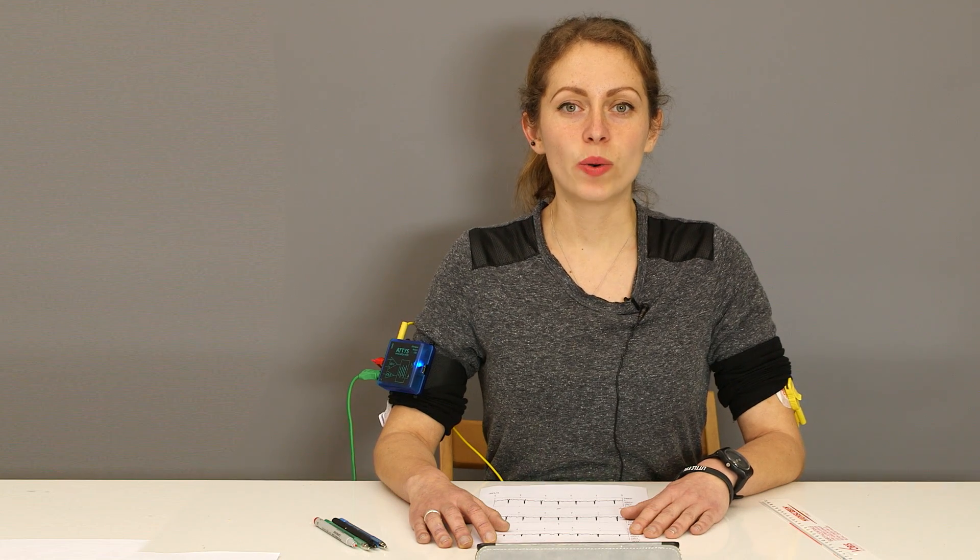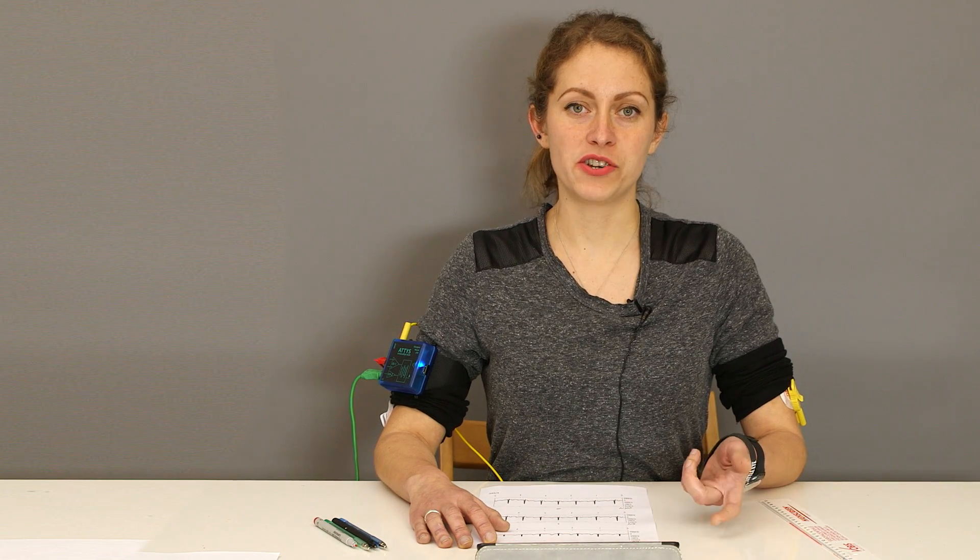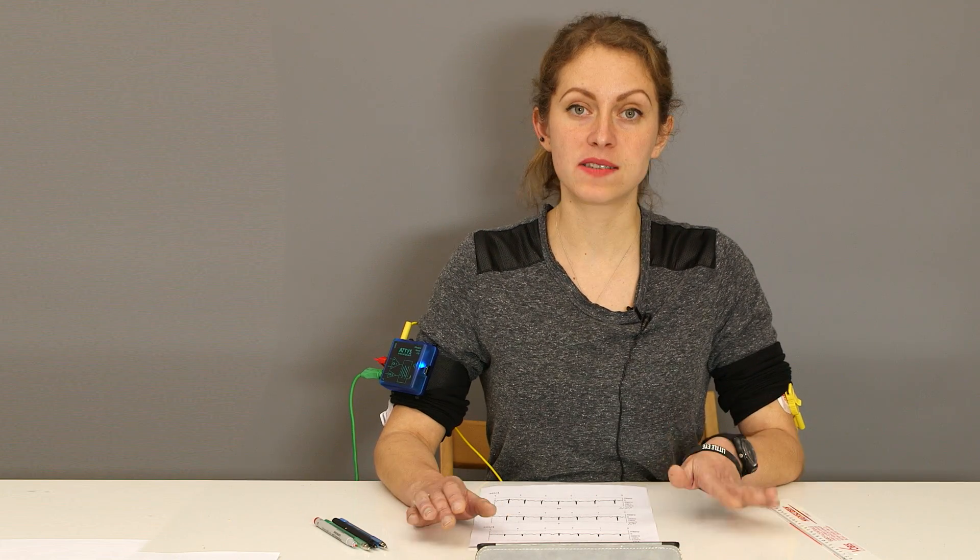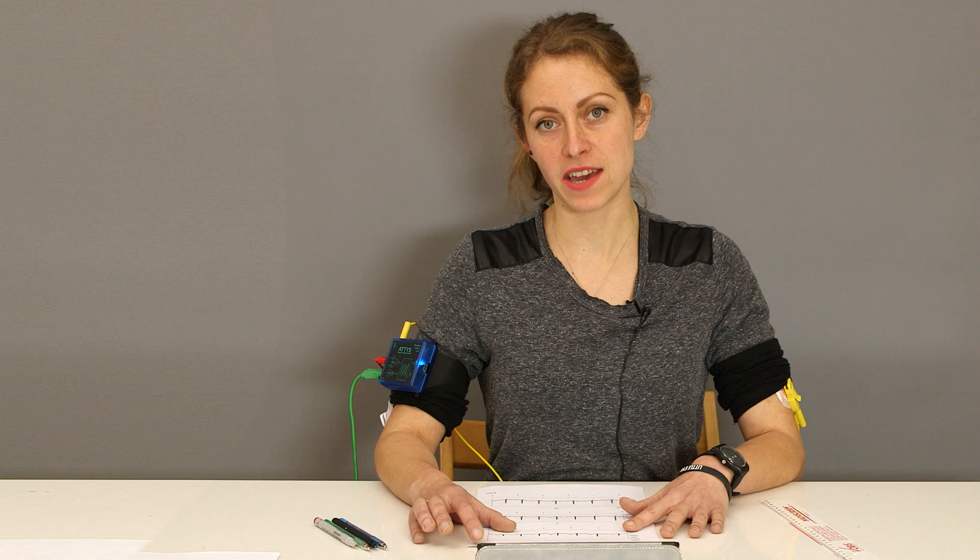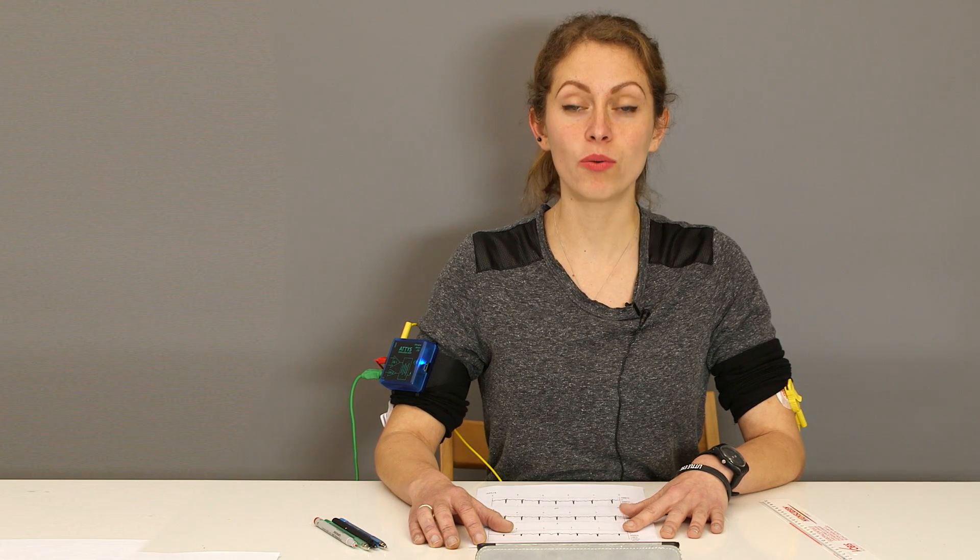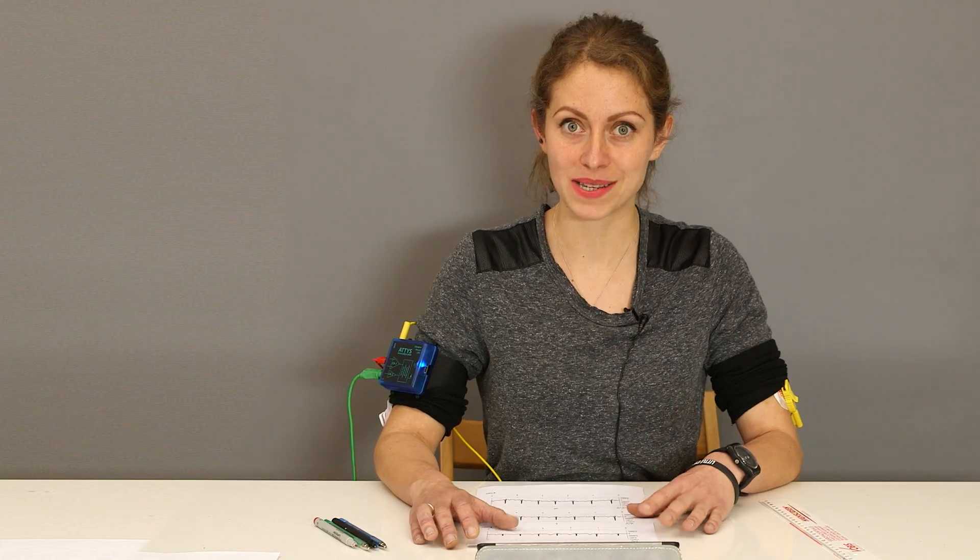Hi there. So in the previous clips we introduced the electrical heart axis and concluded that it's best to use Eindhoven 1 and AVF to construct the electrical vector. Well, now we're going to recap why that is the best approach.